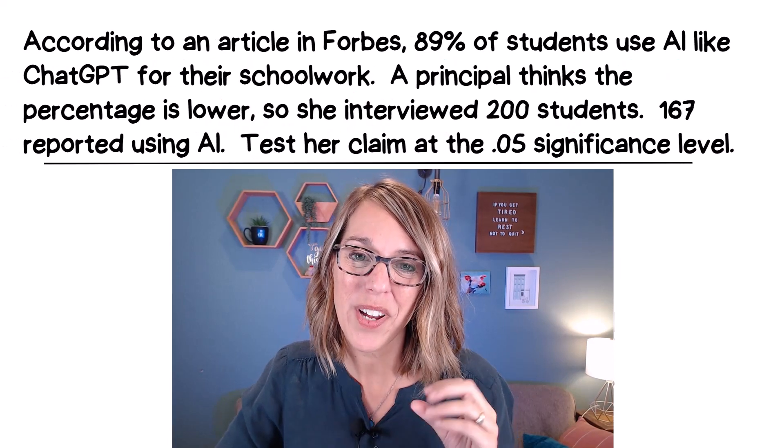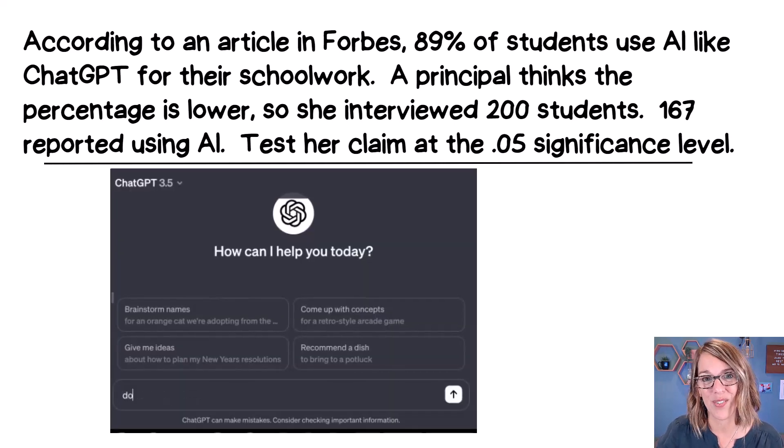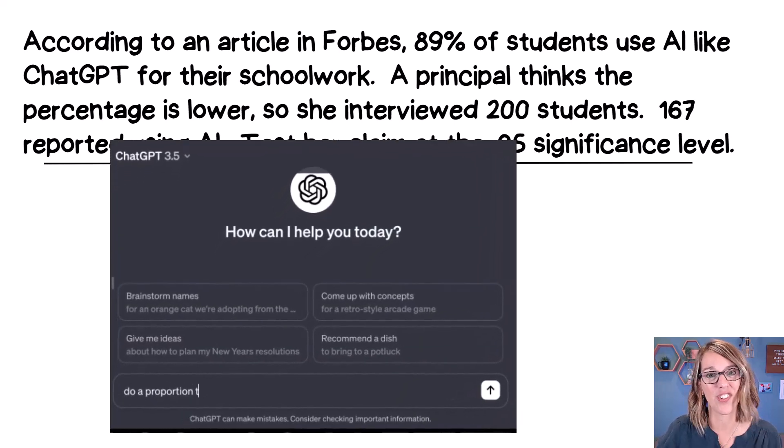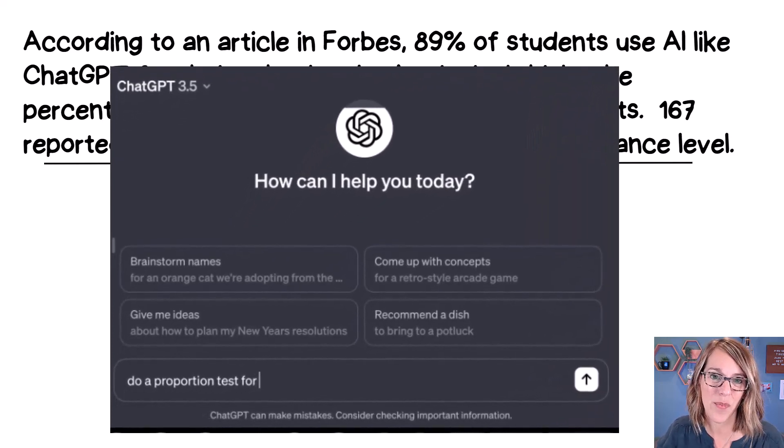I'm going to walk you through how to test a proportion. We're going to use this example. According to Forbes Magazine, 89% of students say that they use an artificial intelligence, an AI, like ChatGPT, to do their homework.